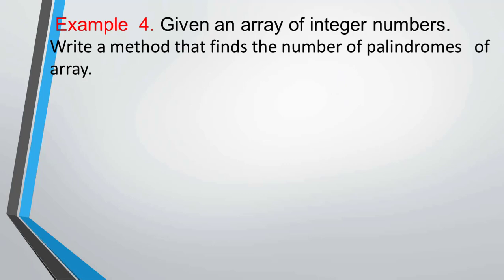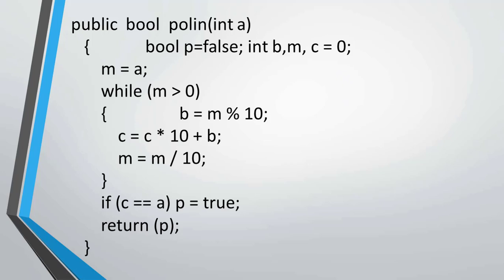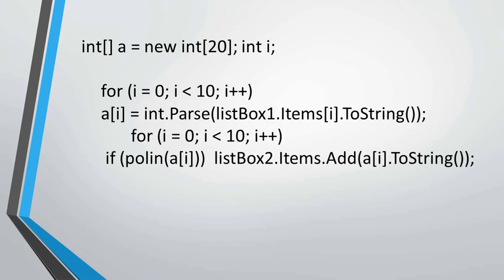Example four: given an array of integer numbers, write a method to find the number of palindromes in the array. You can see on the screen the code of the program. This uses a function with a boolean variable p equal to false. In the main program, we declare variables and determine the elements of the array. For output of the array elements, we use the ListBox component.